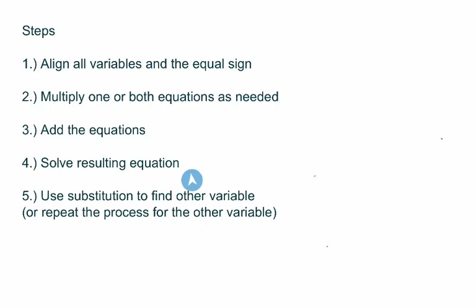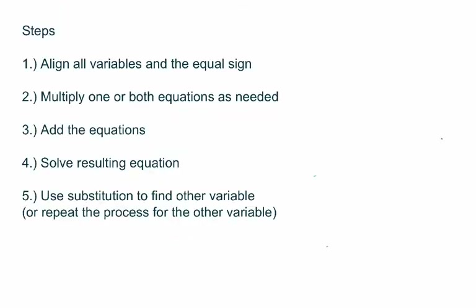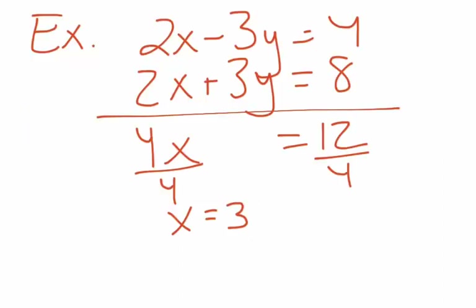Next step is solve the resulting equation. Divide both sides by four and we get X is equal to three. Remember from the last lesson, the definition of a solution to a system is the values of the variables that make all the equations true. I only have one variable here — I have the X. Now I can substitute to find Y, or I can repeat the process. We're going to substitute to find Y. You can substitute into either of those equations — I'm going to pick the one without negatives: two X plus three Y equals eight, and I'll plug in three for X.